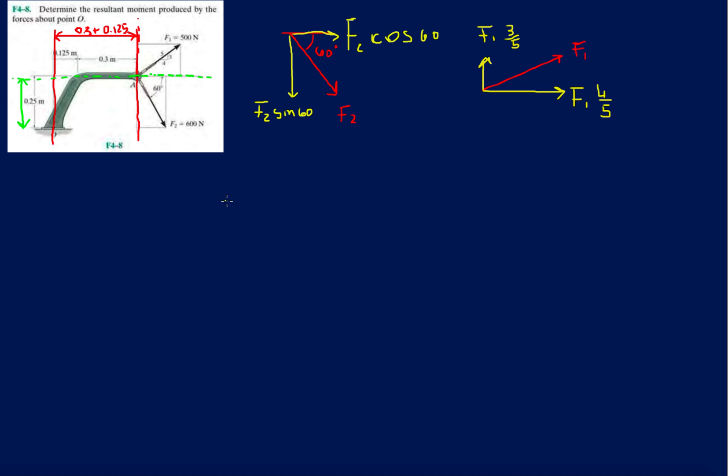Alright, now that we have that set up, let's take the resultant moment. So again, the resultant moment, anytime they have a resultant of anything, resultant force, resultant moment, you're just summing up all the moments. So for this one, let's just start. So F2 cos 60, that's the x component, times 0.25.